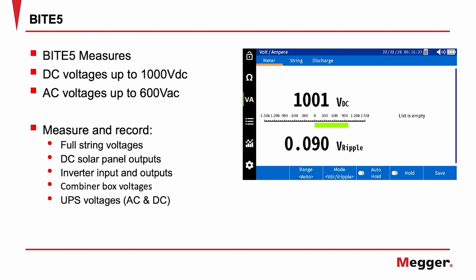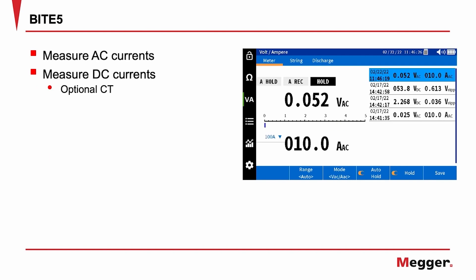This allows you to measure and record full-string voltages, DC solar panel outputs, the input and output of inverters, combiner box voltages, as well as AC and DC UPS voltages. The Byte 5 also measures both AC and DC currents with the use of an optional CT.